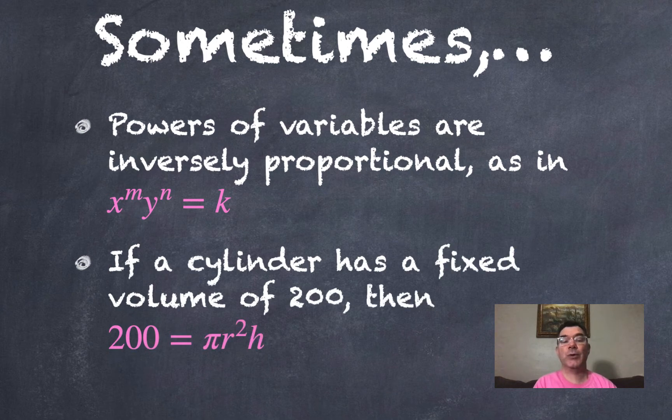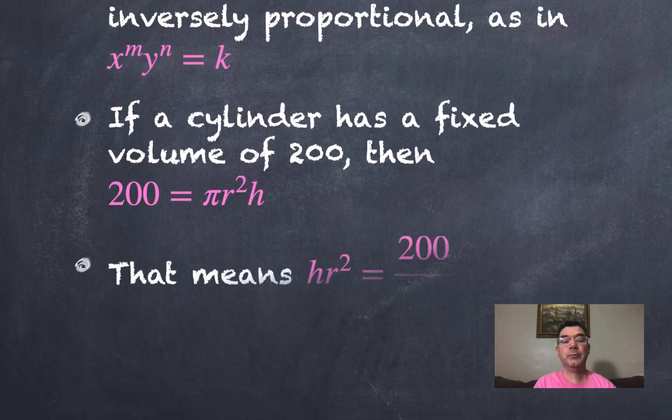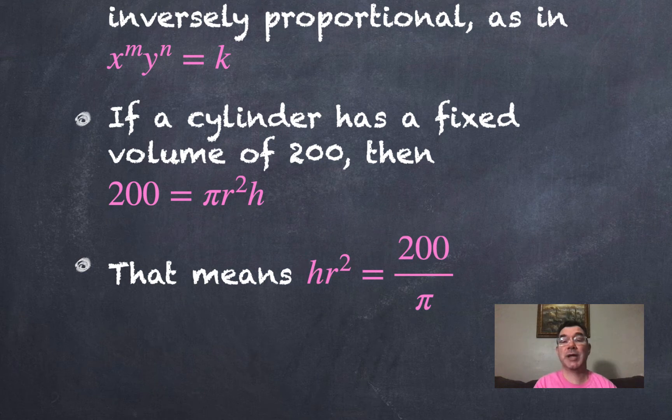So let's say for example we had a cylinder with a fixed volume of 200. Then I know that 200 would equal the formula for the volume of a cylinder which is π times the radius squared times the height of the cylinder. I can divide both sides by π and I would get that h times r squared would equal 200 over π.